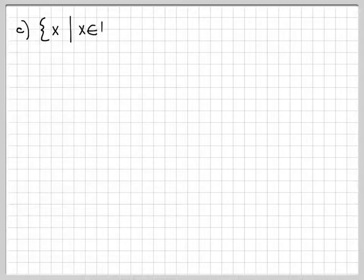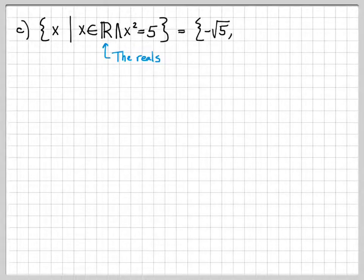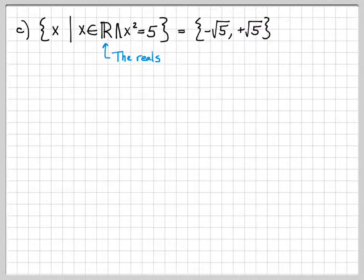Let's do another one. Consider the set {x ∈ ℝ | x² = 5}. We know what the real numbers are — it's the continuum of values from negative infinity to infinity. We need to find values that satisfy both element hood tests: x must be real, and x² must equal 5. From algebra, there are only two values: x equals the square root of 5 and x equals the negative square root of 5. Both are real-valued, so this set consists of just two things: -√5 and +√5.